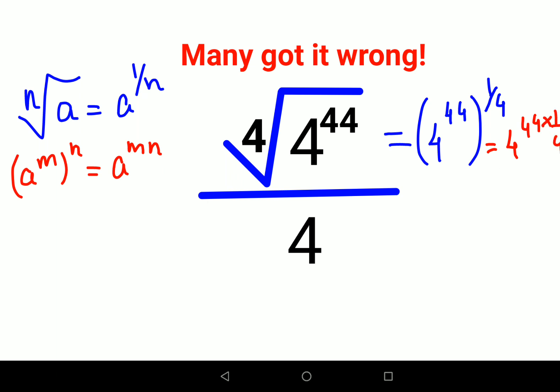So here things are cancelling. 44 times 1 upon 4 gives us 11. So eventually this entire numerator has now become 4 raised to 11.